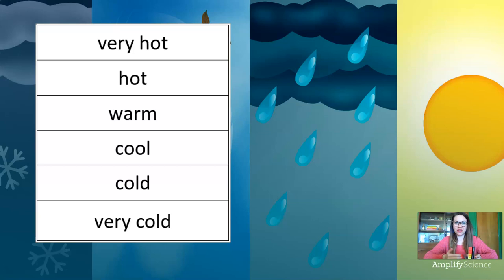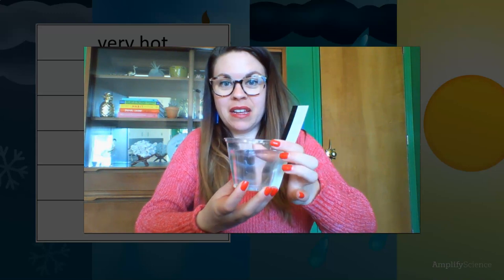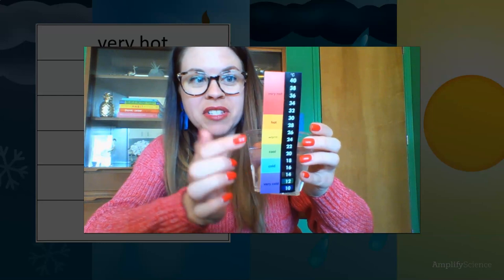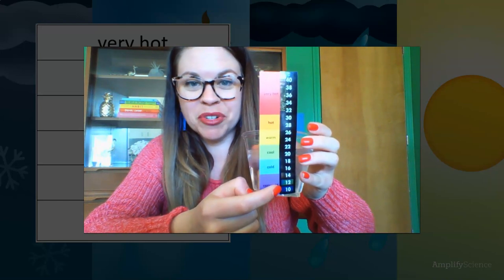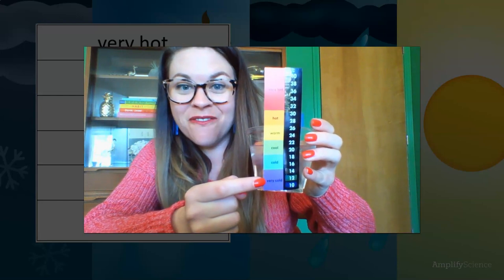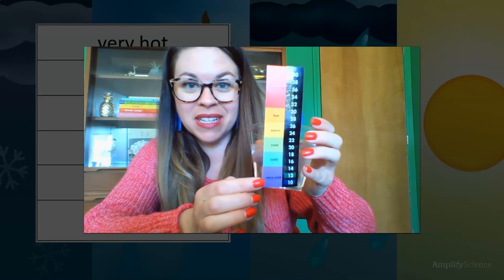Welcome back. I've given the cups of water a couple of minutes to sit with the thermometers so that their correct temperatures can be shown. Let's zoom in and see if our predictions were correct. This is cup number one — try to think back to the prediction you made about its temperature. Let's read the thermometer. Way down at the bottom, we can see that numbers 10 and 12 have color around them, and that tells us that the water inside is very cold. Did you guess that the water was very cold? It's okay if you didn't — scientists make predictions all the time that turn out to not be correct.